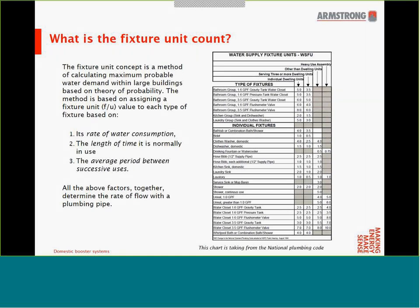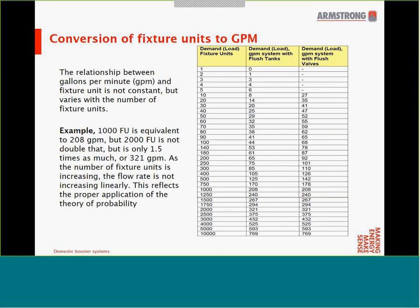For example, when converting a shower used in an individual dwelling into a fixture unit, we would typically need two fixture units for every shower. We go through the entire building inventory list and convert all the water fixtures into equivalent fixture units. It should also be kept in mind that when calculating the maximum probable water demands, fixture unit values are always added — not the GPM values.